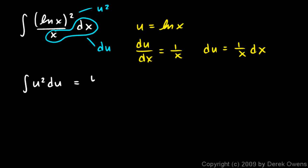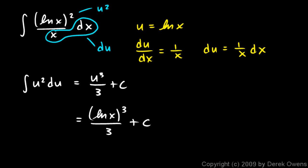So my integral becomes the integral of u squared du, which is easy to integrate by the power rule: that's u cubed over 3. Substituting back, u cubed is natural log of x cubed, so the answer is natural log of x cubed over 3 plus C. Some people write this as ln³x over 3 plus C — both notations are commonly used.